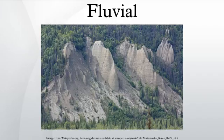Sediment in rivers is transported as either bedload or suspended load. There is also a component carried as dissolved material. For each grain size there is a specific velocity at which the grains start to move, called entrainment velocity. However, the grains will continue to be transported even if the velocity falls below the entrainment velocity due to the reduced friction between the grains and the riverbed. Eventually the velocity will fall low enough for the grains to be deposited. This is shown by the Hjulström curve.